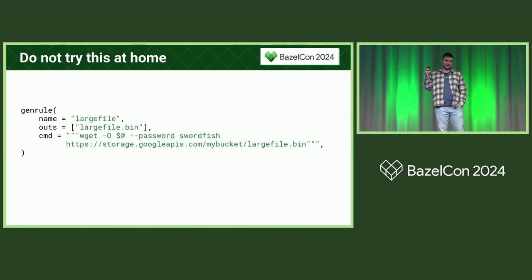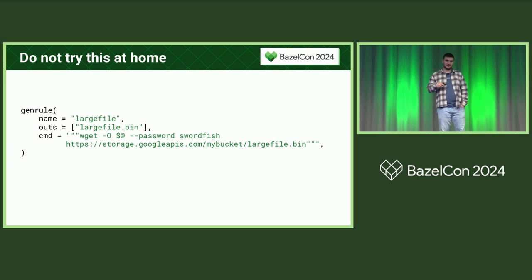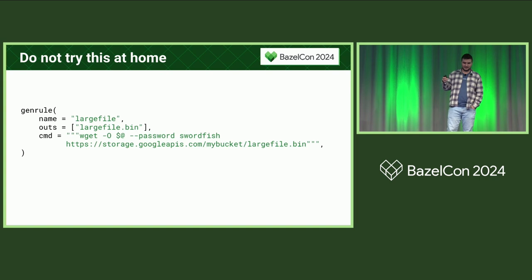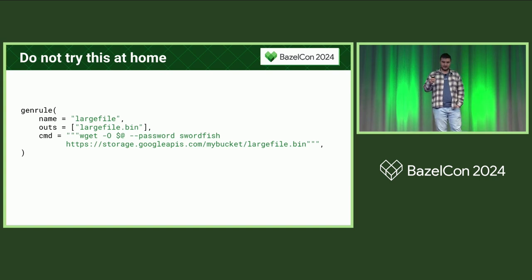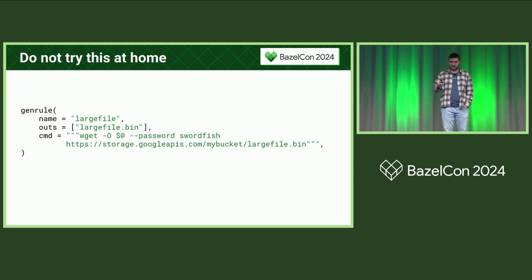So first, you might think this is an okay solution: you just slap a gen_rule on it, call wget, try to access a file from a GCS bucket, and just supply the password. But this is a horrible idea.